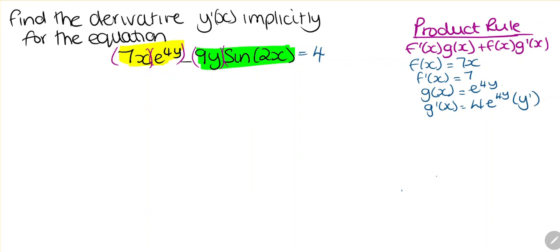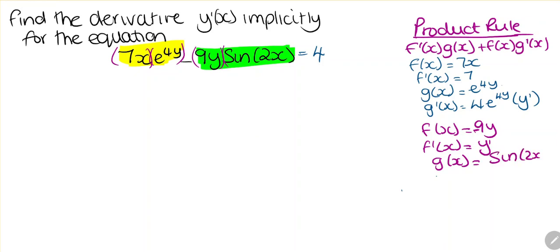If we look at our second term, for our sine, we have f(x) is minus 9y, and then our f prime is going to be minus 9y prime. And then g(x) is sine of 2x. If we differentiate this, we're differentiating the inside and the outside, so we're going to have cosine of 2x multiplied by 2, which we write as 2 cosine of 2x.